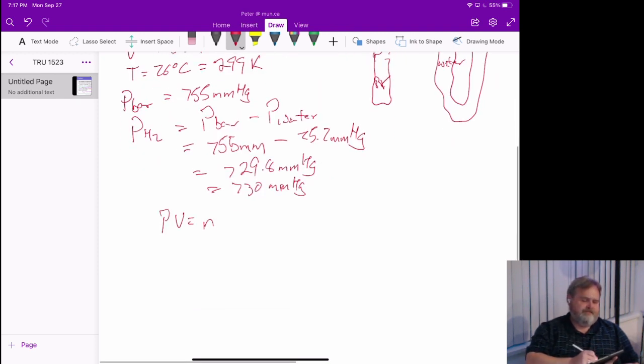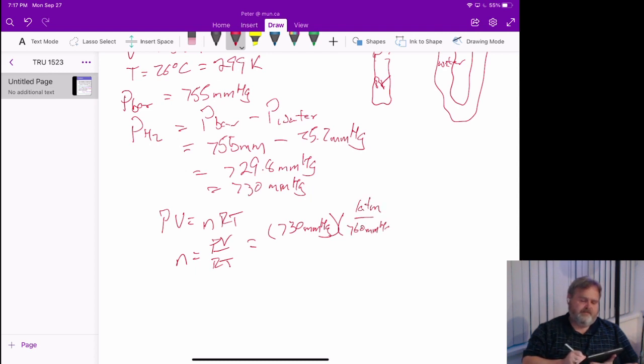PV equals nRT. n equals PV over RT. You notice how we do this rearrangement a lot, because we're often wanting to calculate a number of moles. So pressure, 730 millimeters of mercury, which I could convert by saying one atmosphere is 760 millimeters of mercury, and that lets me use a gas constant with atmospheres in it.